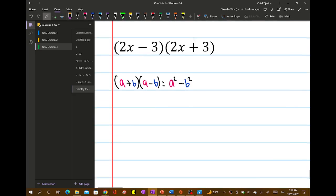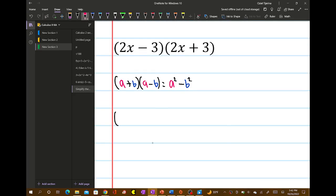So if you think about it, you have 2x minus 3 times 2x plus 3. This is gonna be the quantity 2x quantity squared minus the quantity 3 quantity squared.